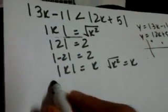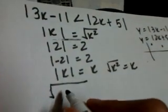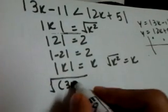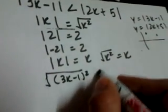And the square root of x squared is also x. Therefore, mod of x equals root of x squared. Applying this: mod of (3x - 1) equals √((3x-1)²), which is less than mod of (2x + 5), which equals √((2x+5)²).